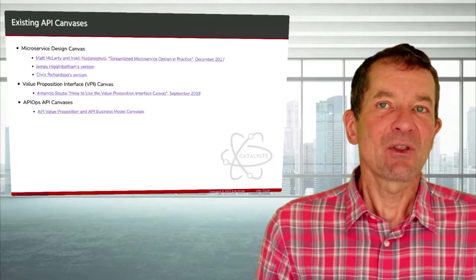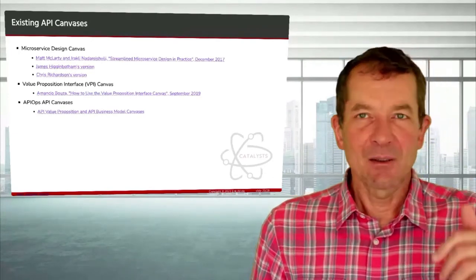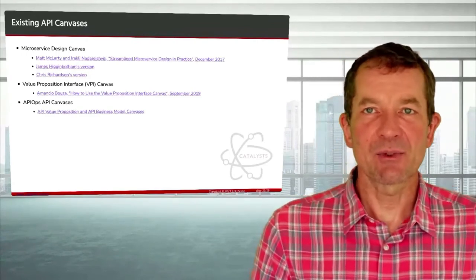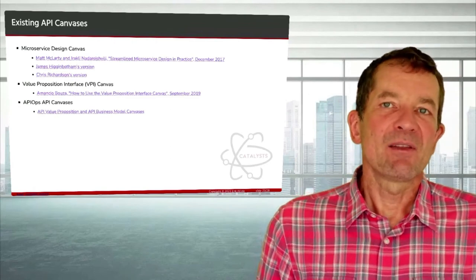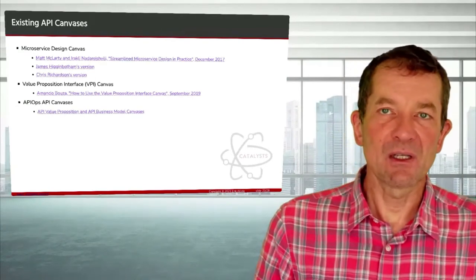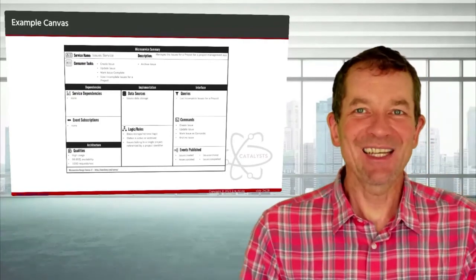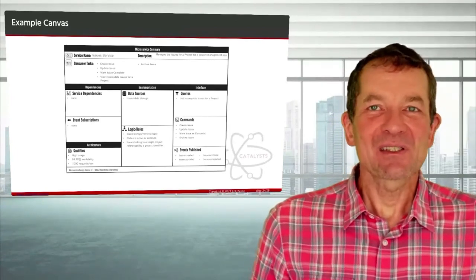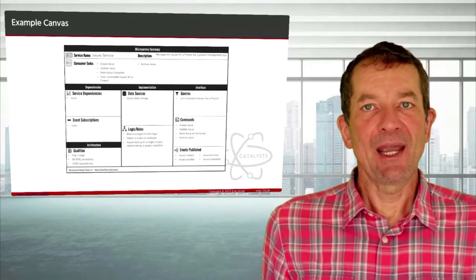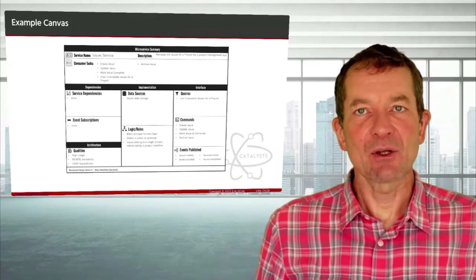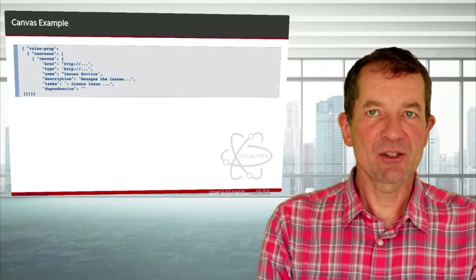And therefore it has become a tool that a lot of people use and find useful. And we've seen that in a variety of canvases that have been proposed. There's something called the microservice design canvas, started by Matt McLarty and Irakli Nadareishvili. There's some variations of it, James Higginbotham and Chris Richardson. I know of the value proposition interface canvas that has been popularized by Amancio Bouza. And then we also have the APIOps Cycles canvases. What such a canvas can look like, here I have an example from James. And it shows you the microservices canvas. And you see just the structured way of how it puts those different things you should think about into a way how you can look at it.